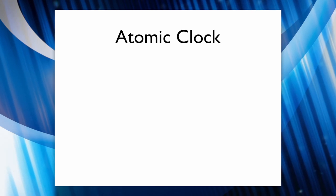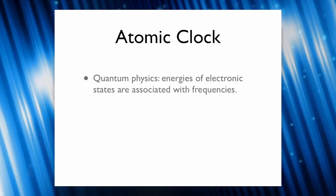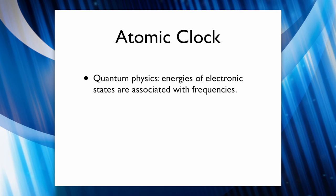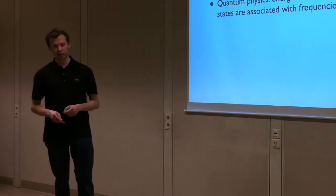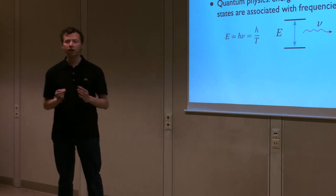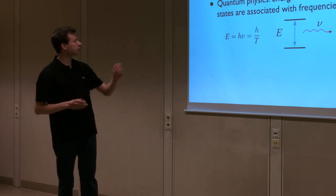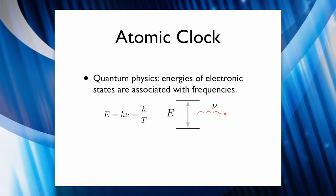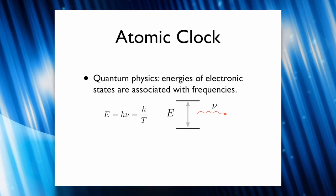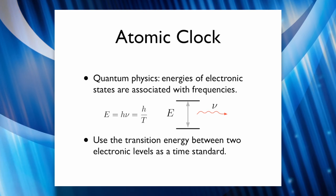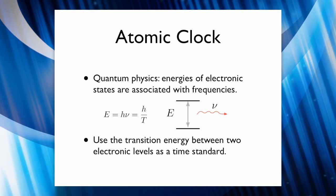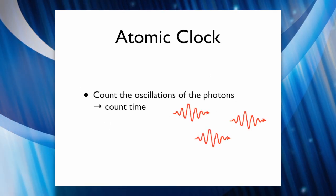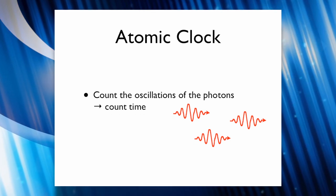How does one come up with the idea to use an atom as a time-keeping device? Quantum physics tells us that the energies an electron can have within an atom are not only quantized — so only certain amounts of energy are possible — but they are also implicitly associated with frequencies, namely by this relation: E equals h nu, where E is the energy between two electronic levels, h is the Planck constant, and nu is the frequency. And since frequency is one over time, you have this implicit connection between energy and time. Thus, you can use the energy between two electronic levels in an atom as a time standard, use monochromatic laser light to measure out this transition frequency, and by counting the oscillations of the emerging photons, you can count time.